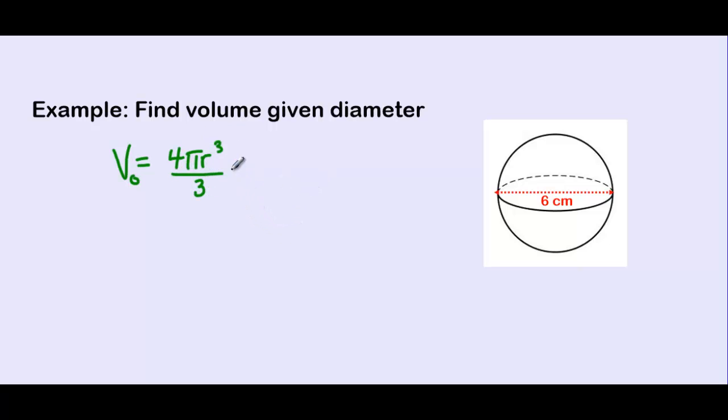We have a radius in the formula, but we're given a diameter. Remember that the diameter is just equal to 2 times the radius. So if our diameter is 6, we can solve for r where r will be equal to 3.